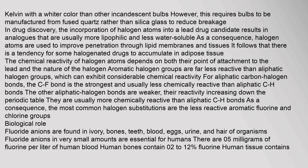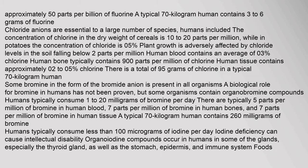Biological role: Fluoride anions are found in ivory, bones, teeth, blood, eggs, urine, and hair of organisms. Fluoride anions in very small amounts are essential for humans. There are 0.5 mg of fluorine per liter of human blood. Human bones contain 0.2–12% fluorine, and human tissue contains approximately 50 parts per billion of fluorine. A typical 70 kg human contains 3–6 g of fluorine. Chloride anions are essential to a large number of species including humans. The concentration of chlorine in the dry weight of cereals is 10–20 parts per million, while in potatoes the concentration of chloride is 0.5%. Plant growth is adversely affected by chloride levels in the soil falling below 2 parts per million. Human blood contains an average of 0.3% chlorine, and human bone typically contains 900 parts per million. Human tissue contains approximately 0.2–0.5% chlorine, and there is a total of 95 g of chlorine in a typical 70 kg human.